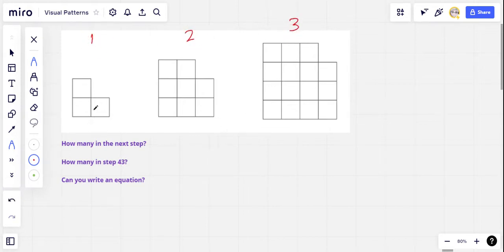And your job is to figure out how many of these squares are going to be in step four. And then if you can, how many in step 43? And can you write an equation that you could use to predict the number of squares in any step at all?